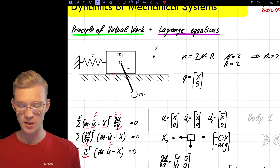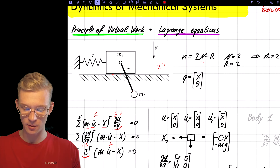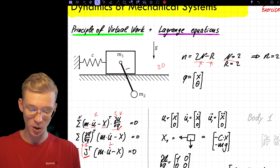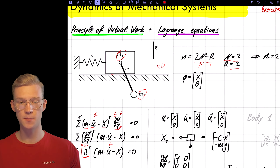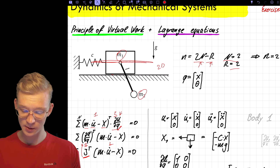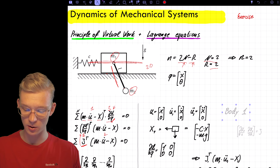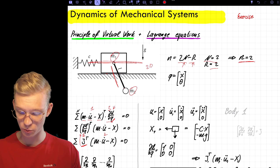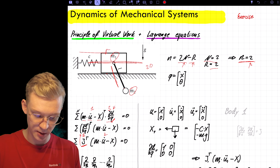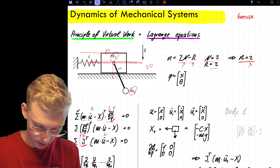First of all, we have to see how many generalized coordinates we have. We are now in 2D, so we get 2 times N minus R. R is our constraints, and N is the number of bodies. We have two bodies — mass 1 and mass 2 — and we have two constraints. The first constraint is that mass 1 can only move along the horizontal axis, and constraint number 2 is that this length has to be constant. So we are left with lowercase n equals 2.